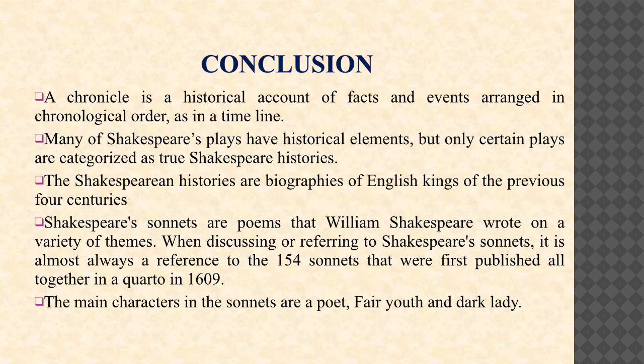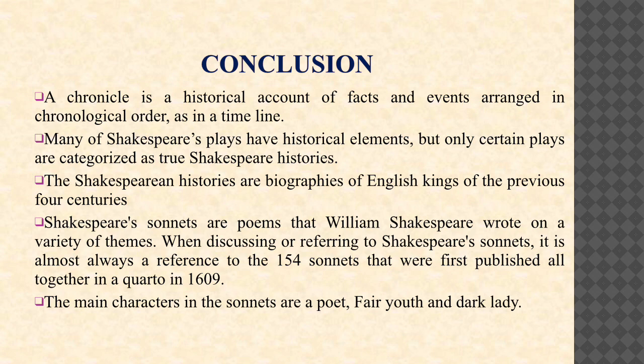Conclusion: a chronicle is a historical account of facts and events arranged in chronological order, as in a timeline. Many of Shakespeare's plays have historical elements, but only certain plays are categorized as true Shakespeare histories — biographies of English kings of the previous four centuries. Shakespeare's sonnets are poems that William Shakespeare wrote on a variety of themes; when referring to Shakespeare's sonnets, it is almost always a reference to the 154 sonnets first published altogether in a quarto in 1609. The main characters in the sonnets are the poet, the fair youth, and the dark lady.